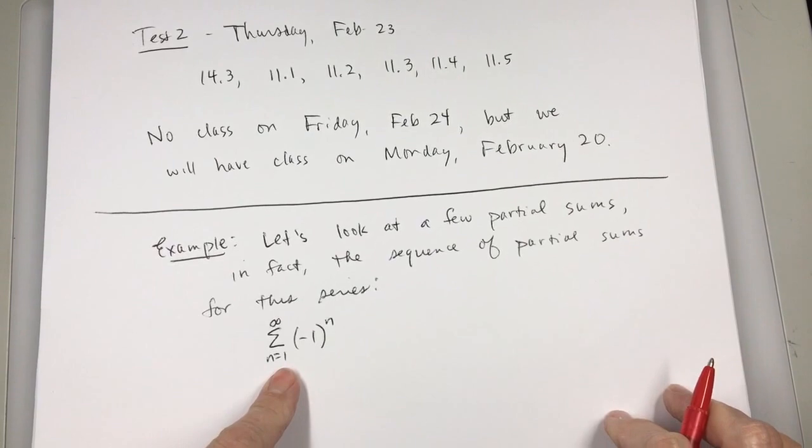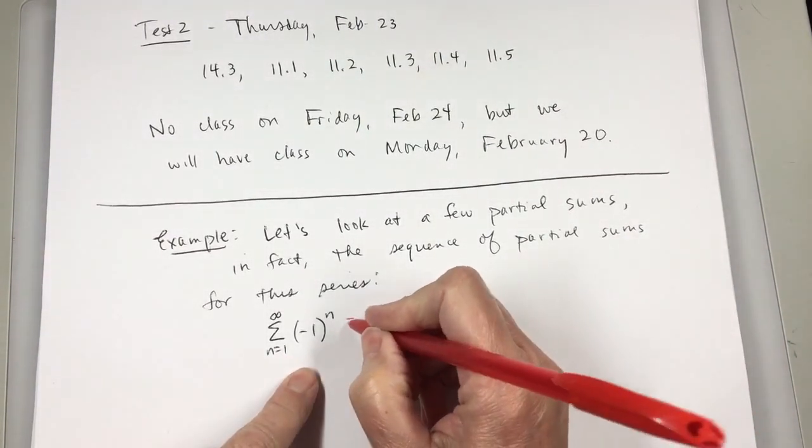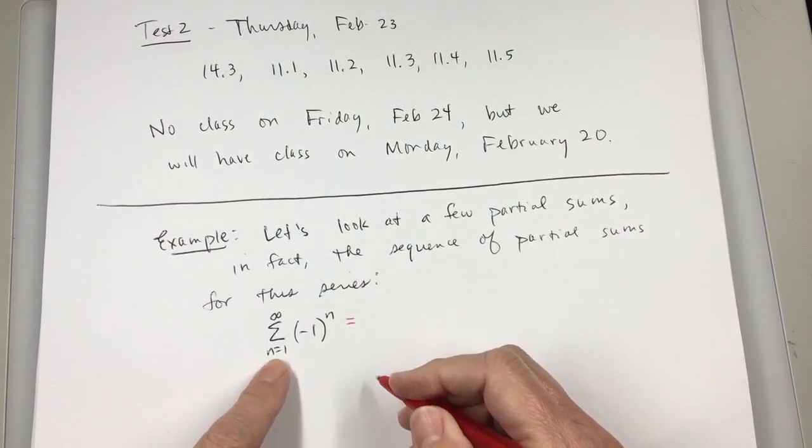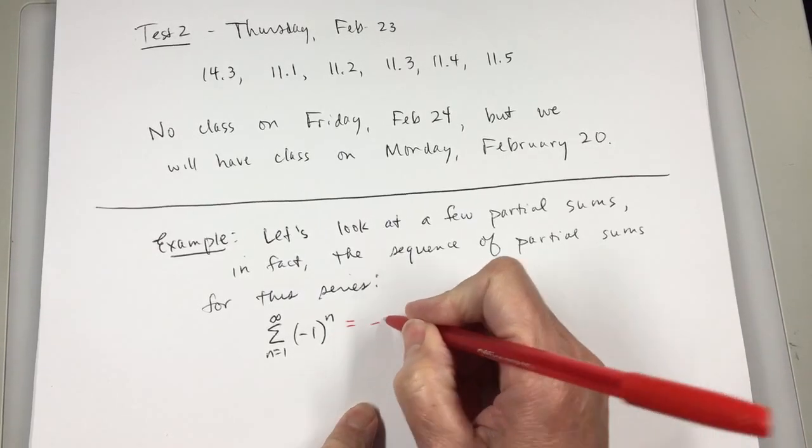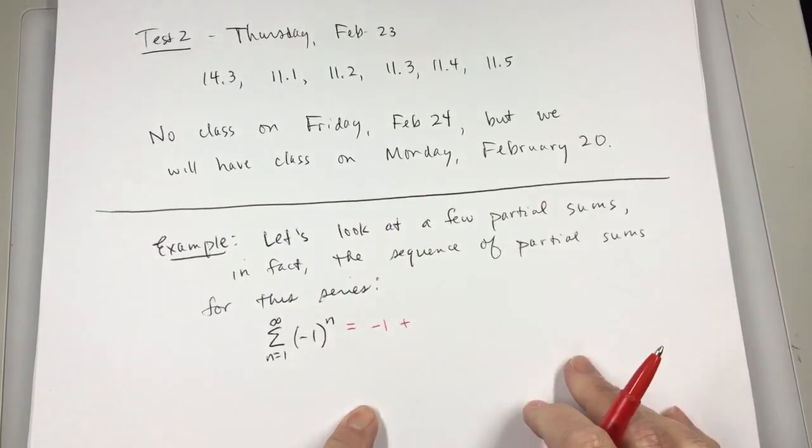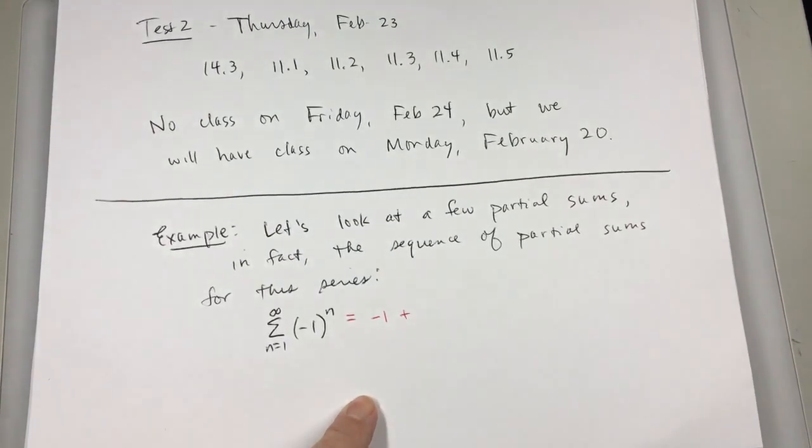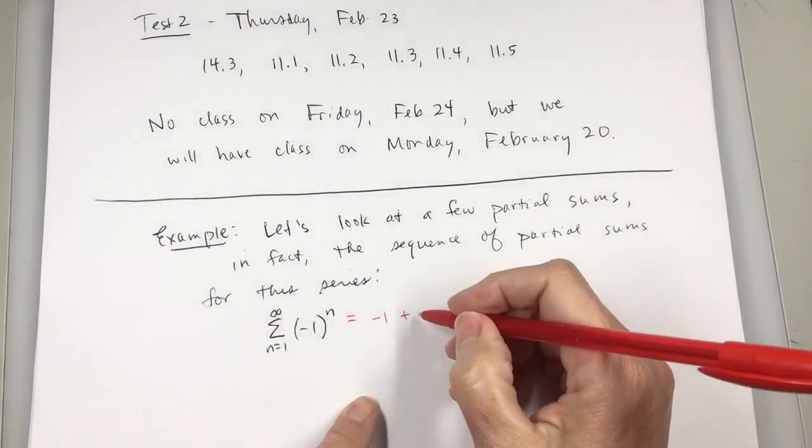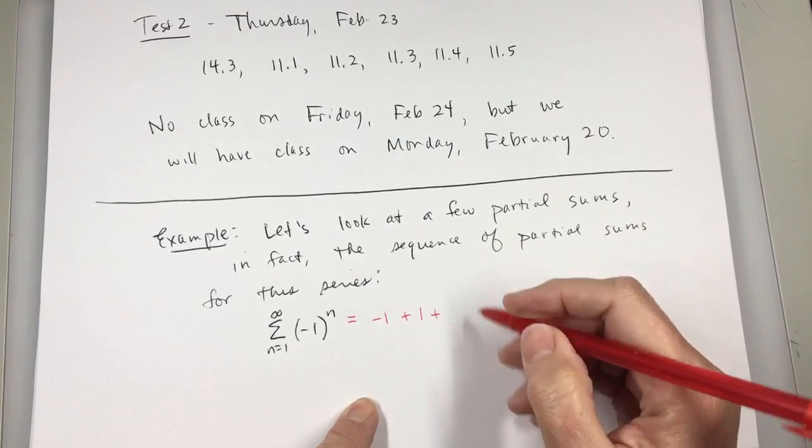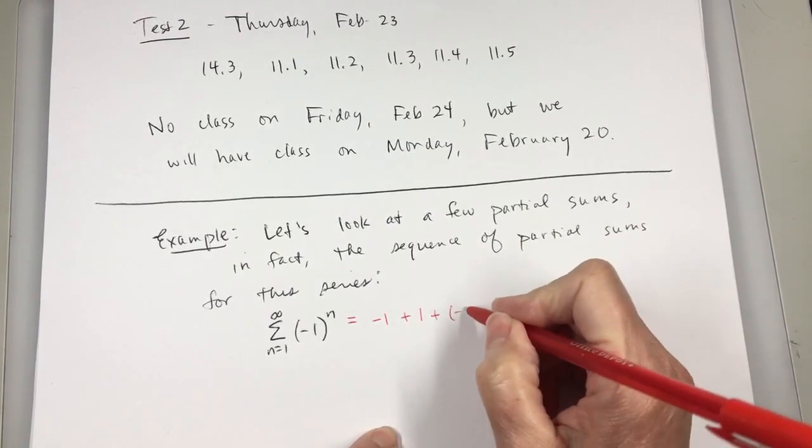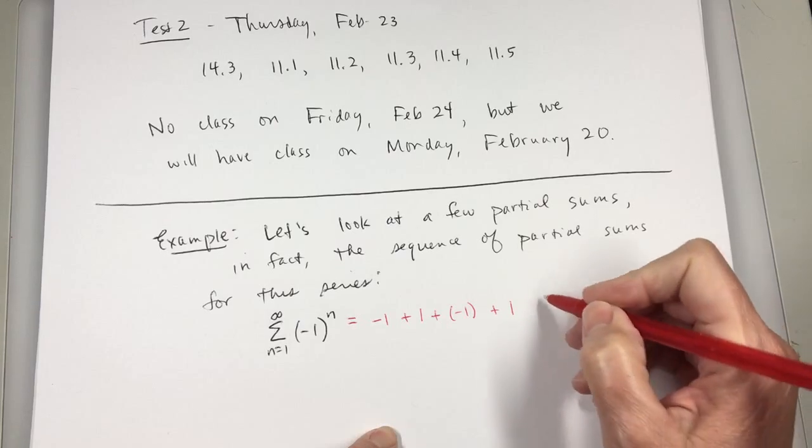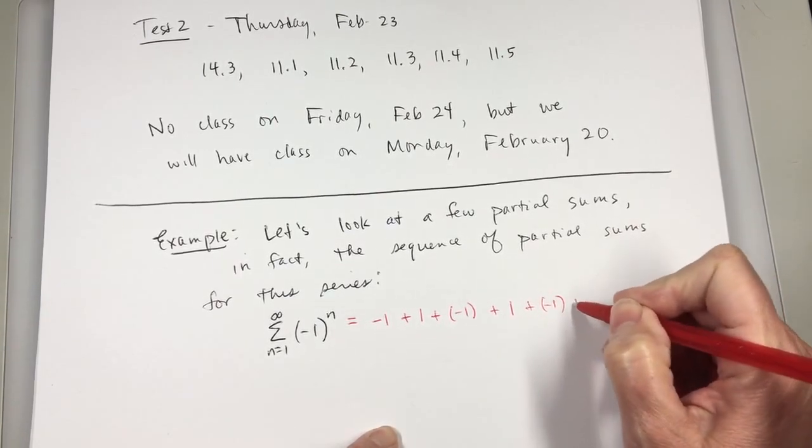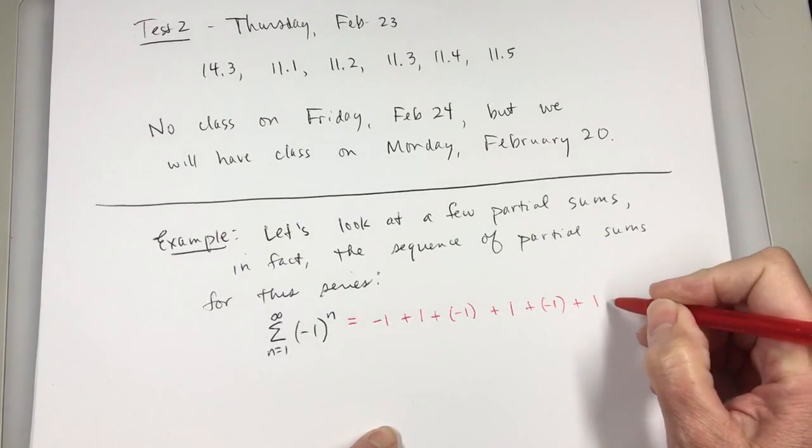When n is 1, what is the first term? Negative 1 to the 1 would be negative 1. When n is 2, it is positive 1. When n is 3, it is negative 1. When n is 4, it's positive 1. When n is 5, it's negative 1. When n is 6, it's positive 1.